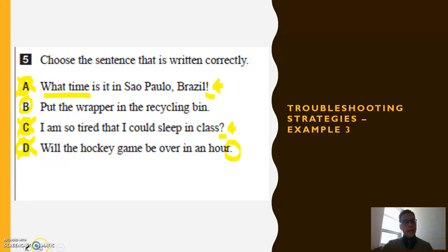This means that, by definition, the only sentence that is written correctly is sentence B. Put the wrapper in the recycling bin. It's a simple sentence. It begins with a capital. It ends with a period. And it is instructive, rather. Put the wrapper in the recycling bin. And I know that that sentence must be written correctly, because A, C, and D are not.